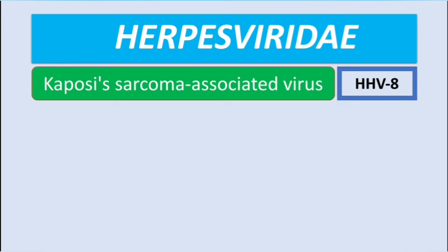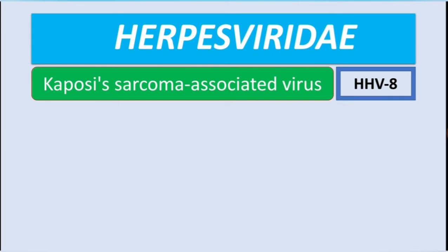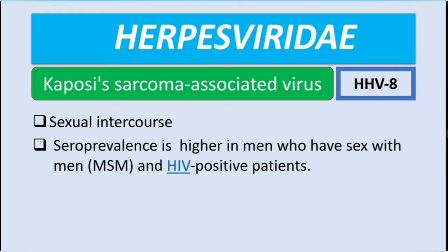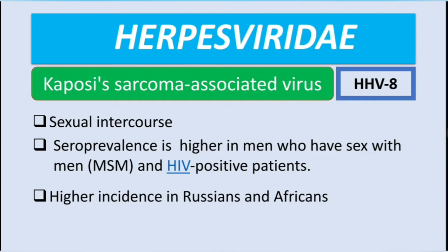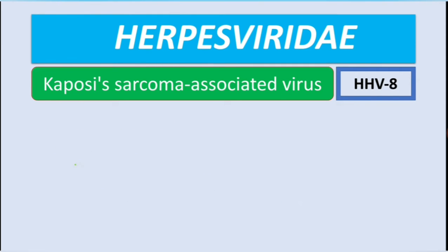The Kaposi sarcoma-associated virus, or HHV-8, is transmitted through sexual contact. The seroprevalence is high in men who have sex with men and also in HIV-positive patients, with higher incidence in Russia and in Africa.